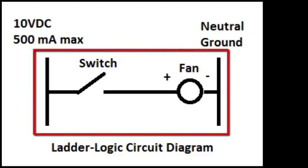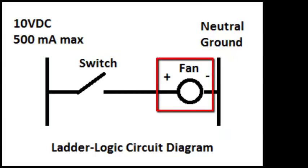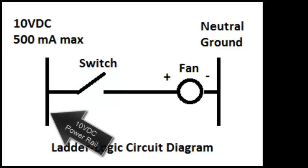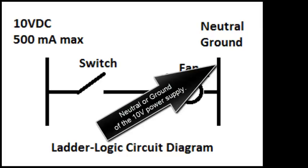But first, just the DC fan and a switch. This is a ladder logic circuit diagram. There's the fan and the switch. That's a power rail. That's the ground or neutral rail.